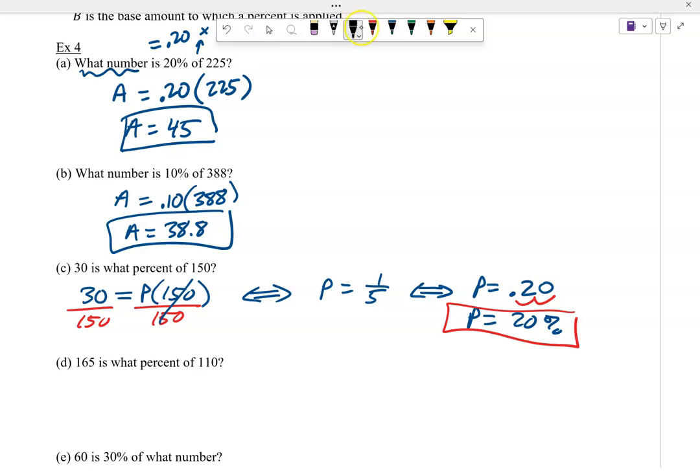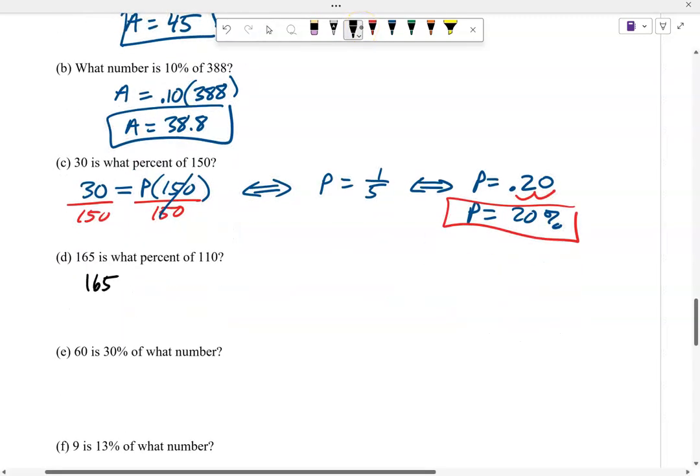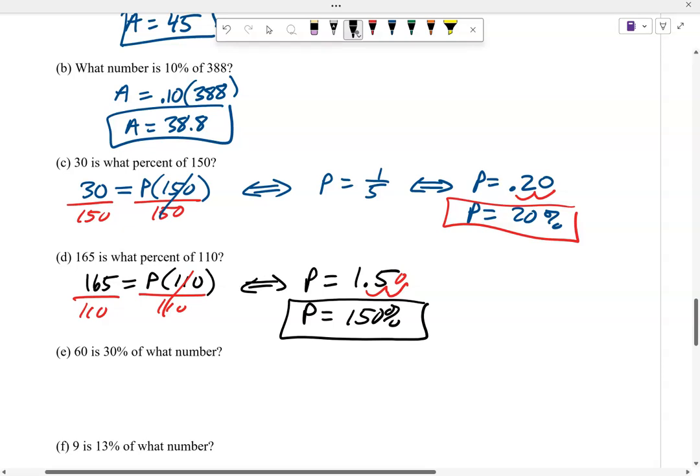Let's do this next one. 165 is what percent of times 110? We solve for P. P equals - I punch in 165 divided by 110, I get 1.5. But remember, I've got to write this as a percent. So I've got 150%. 165 is 150% of 110. Because if you think about it, 100% of 110 is 110, the full amount. So 165 has got to be more than 100%.